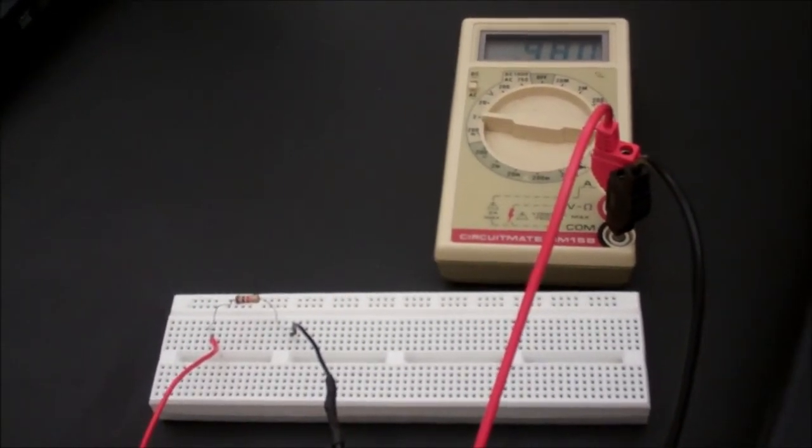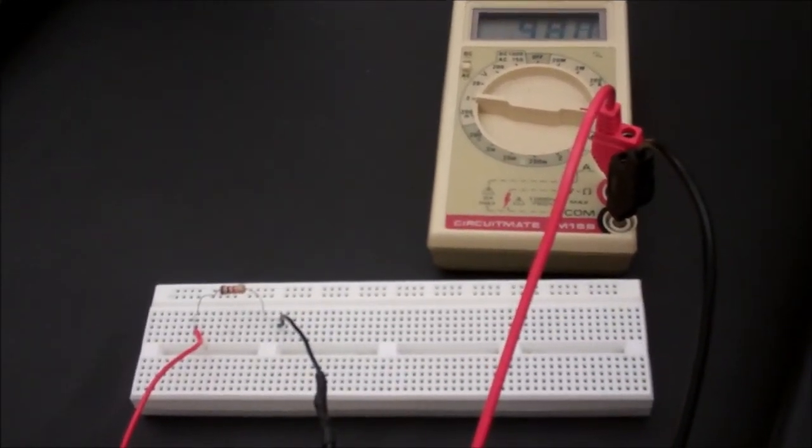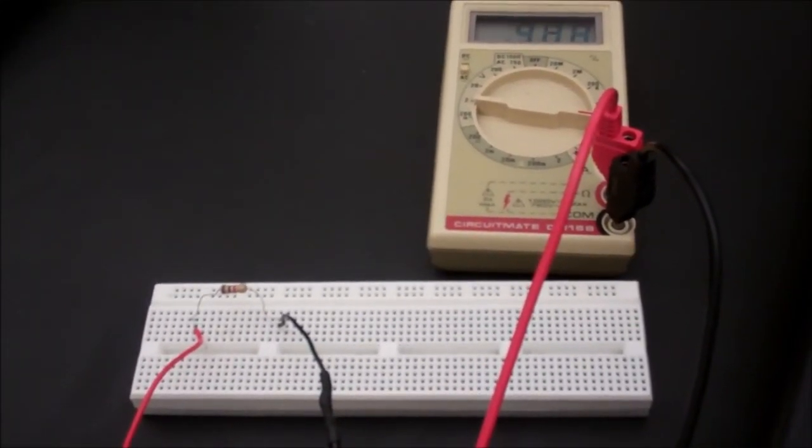If the resistor is good, it should be within the documented tolerance range of the band value. If you find that it isn't, double check that you read the values correctly.